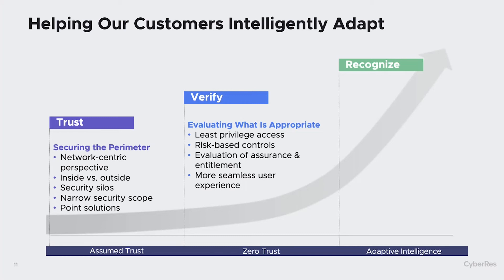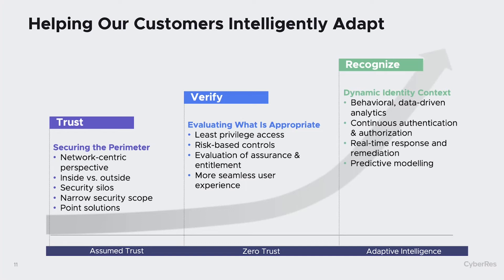Zero trust is a huge step forward over assumed trust. But we want to enable our customers to get to this concept of adaptive intelligence — where you can recognize something as it's happening or even before it's happening. This typically leverages both behavioral and data-driven analytics. It builds upon assurance and entitlement toward a continuous authentication and authorization model: not one-shot-and-you're-done, but constantly reevaluating the risk and whether authorization needs to change based on behavior or changing conditions. This leads to the ability to do near real-time or actual real-time response and remediation.